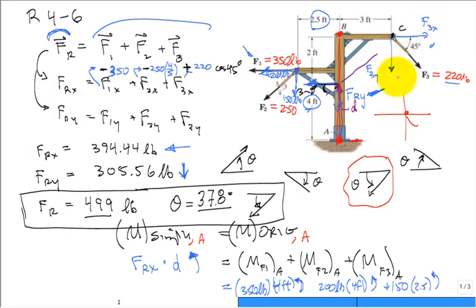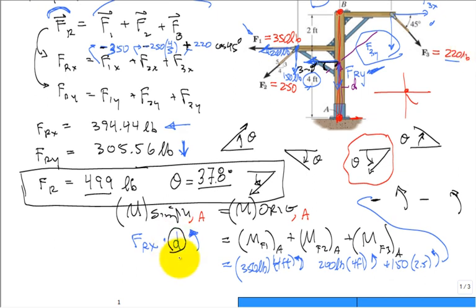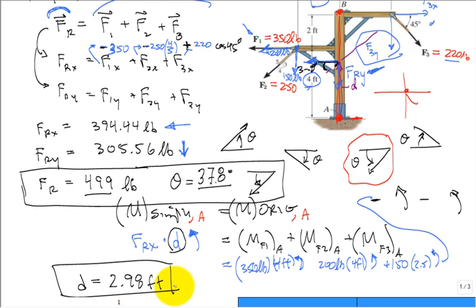For F3, decompose into F3x and F3y — both components make it want to rotate clockwise, so they get negative signs (opposite to counterclockwise). Now the equation has everything known except d. Solving for d gives approximately 2.98 feet, rounded to three significant digits.